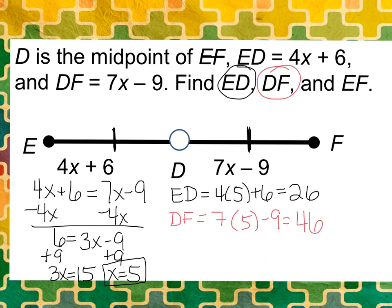26. That's why I like to have a calculator handy, just in case. That should make sense, right? They should both be 26 since ED is equal to DF. Good.